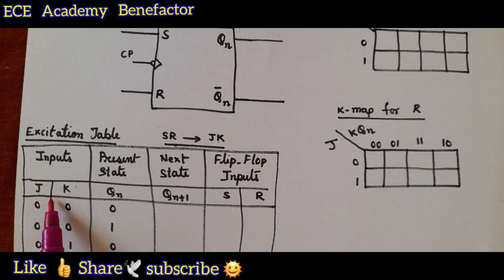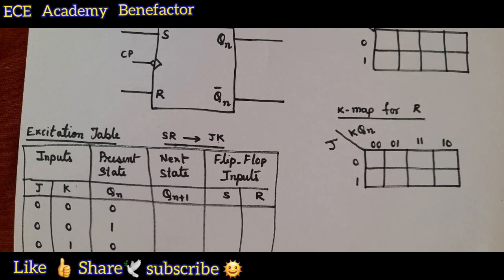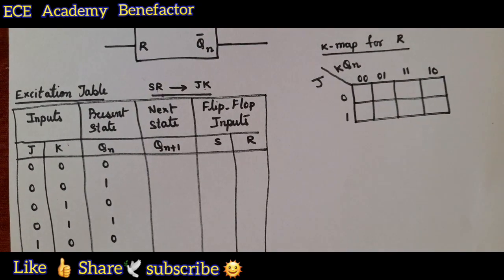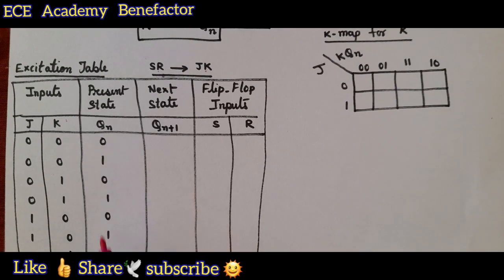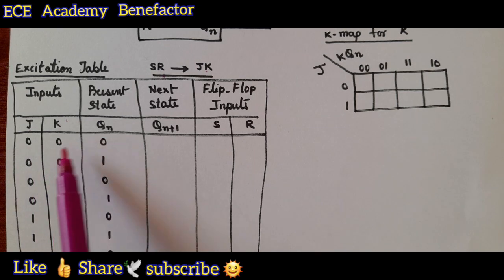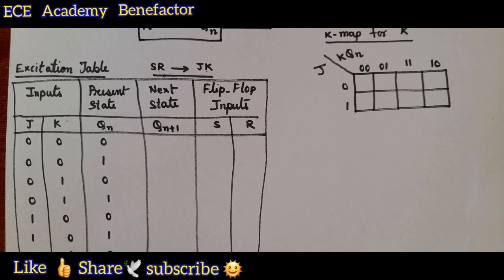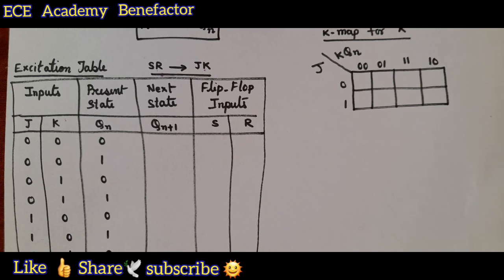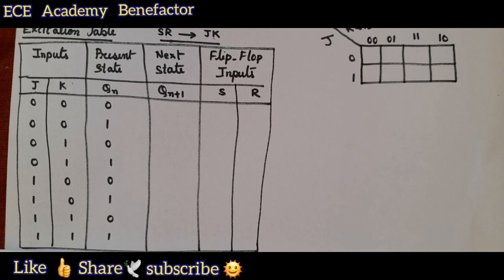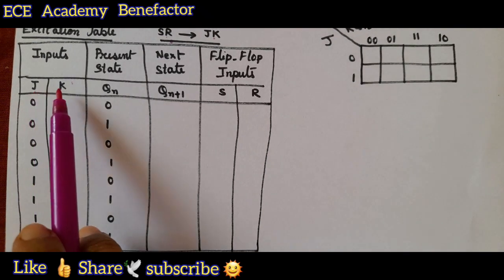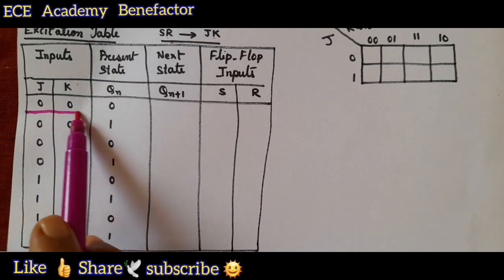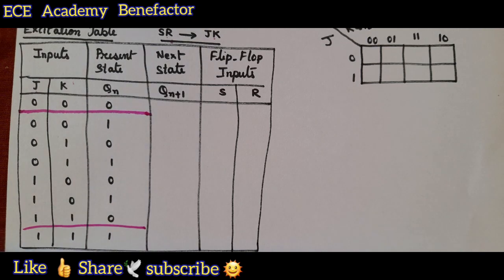We need to write a truth table for 3 variables J, K, and Qn. For 3 variables we have 2 to the power 3 = 8 combinations, from 000 to 111: 000, 001, 010, 011, 100, 101, 110, 111. In this way we have written the inputs for 3 variables J, K, and Qn starting from 000 to 111.